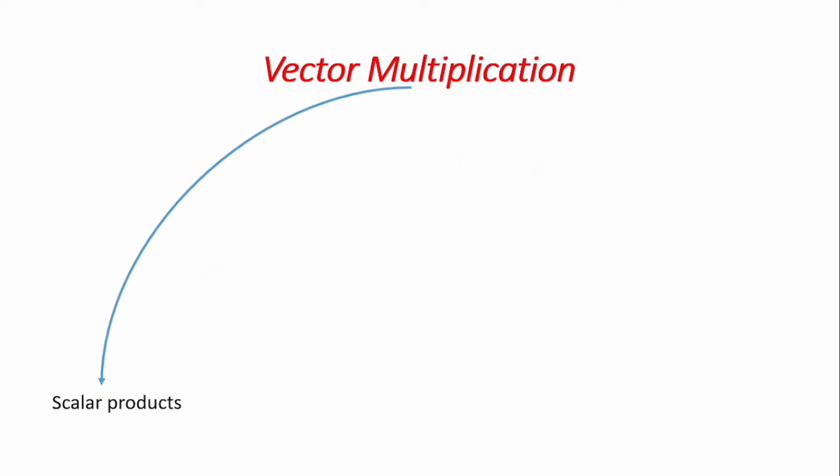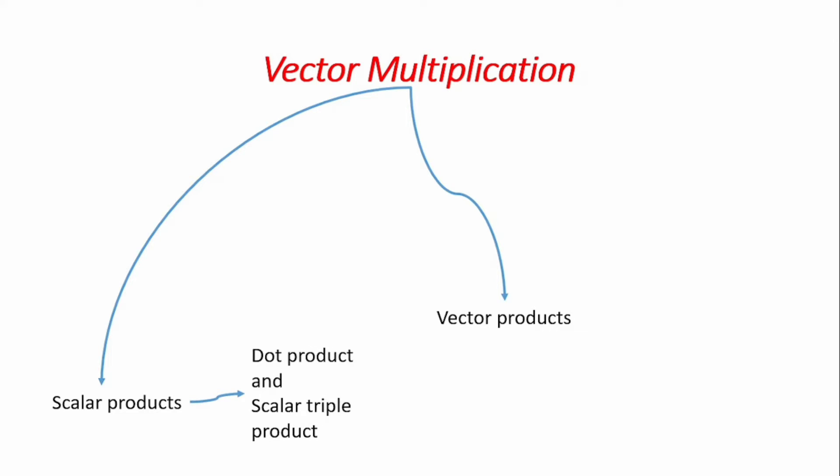Vector multiplication could be scalar products or vector products. By scalar multiplication, we are looking at a form of multiplication in which the final answer will be a scalar quantity — just a number. A scalar product could be a dot product, where you multiply two vector quantities to get a scalar result. It could also be a scalar triple product, where we multiply three quantities together to get a scalar result.